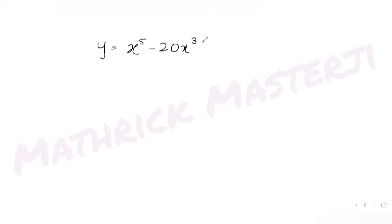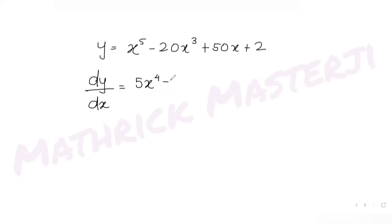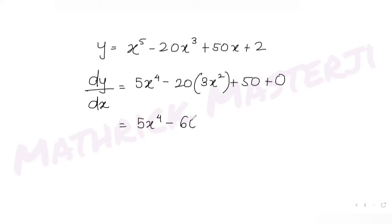We have the function y = x⁵ - 20x³ + 50x + 2. Taking the derivative with respect to x gives us dy/dx = 5x⁴ - 60x² + 50, since the derivative of the constant is 0.